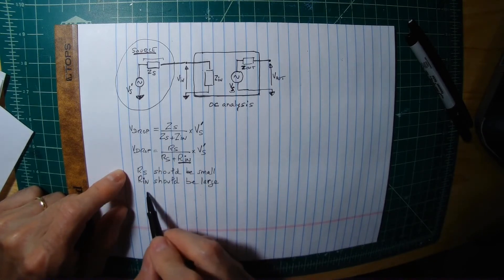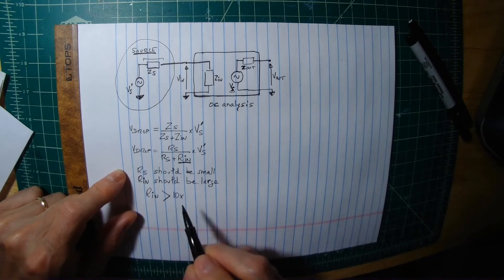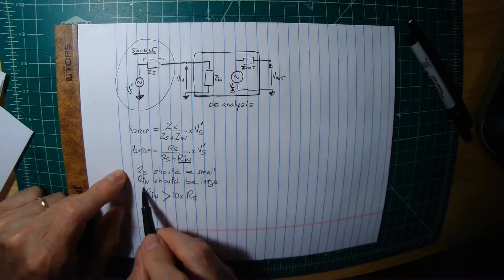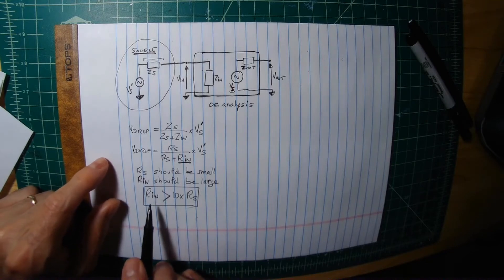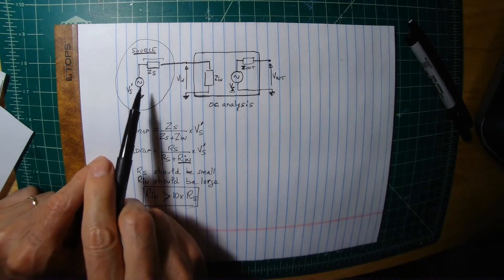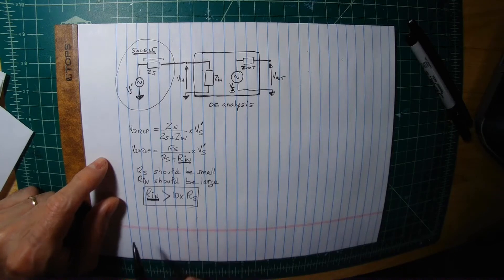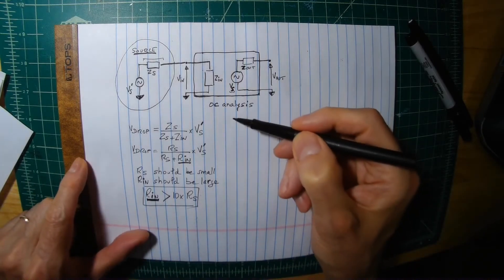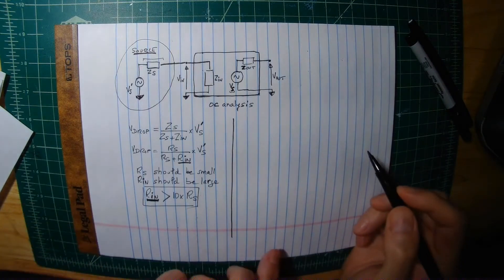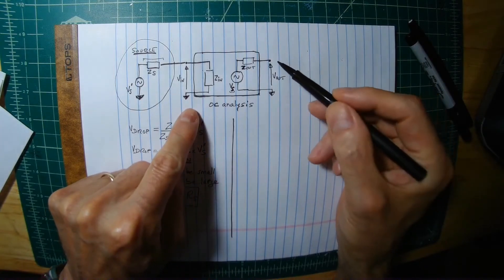In practice, you want R_in to be larger than 10 times R_S. Intuitively, if R_in is large it cannot draw too much current from the source. You may not have control over R_S, so the key design target is that R_in should be large. That concludes the input side discussion.